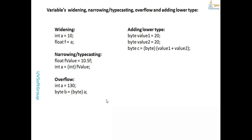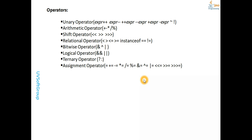We also talked about widening, narrowing, type casting, overflow, and adding lower type data. You can look back at previous screencasts for the detailed discussion with examples and program codes. Today we try to give you a very abstract overview of the different types of operators in Java.